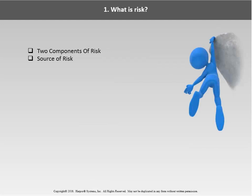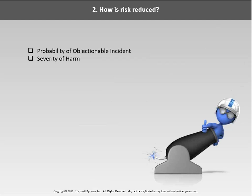There are two components of risk: the probability of an objectionable incident and the severity of harm when it occurs. The important thing is to understand the source of that risk — what actually causes the objectionable incident. When reducing risk, there are two ways: reducing the probability of the incident, or reducing the severity of harm. You'll find it's much easier to stop the incident than to contain the effects. And critically, when reducing risk, you must get to the root cause. The number one reason people are unsuccessful at reducing risk is they don't get to the root cause — they deal with the symptoms.